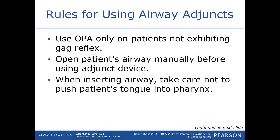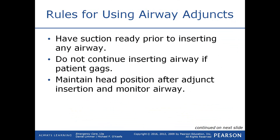You can only use an oropharyngeal airway in a patient who does not exhibit a gag reflex. If you put an OPA into someone's mouth and they start gagging, you need to remove it immediately, because leaving it in and allowing them to gag and retch could cause vomiting and aspiration into the lungs. Open the patient's airway with a head tilt chin lift or jaw thrust before inserting the device. When inserting, take care not to push or wad the tongue up in the back of the throat. You also need suction ready — we'll discuss suction in part two of airway management.